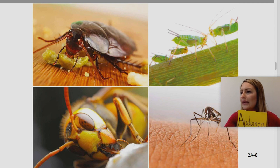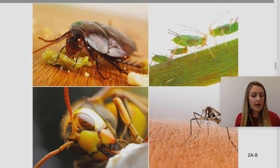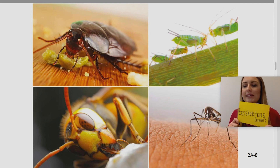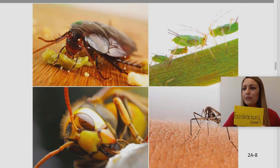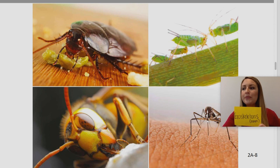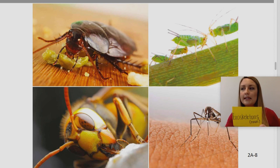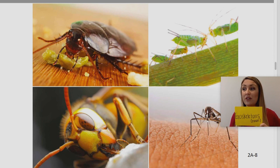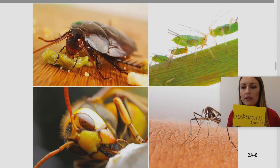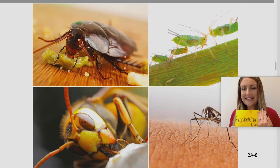Our next vocabulary word is exoskeletons. This word is also a noun, which means it's a person, place, or thing. The definition is the stiff body coverings of insects, providing support and protection — they wear their skeletons on the outside of their body. An example sentence: the thick exoskeletons on beetles protect them from being squashed by larger animals. The singular form of this word would be exoskeleton.